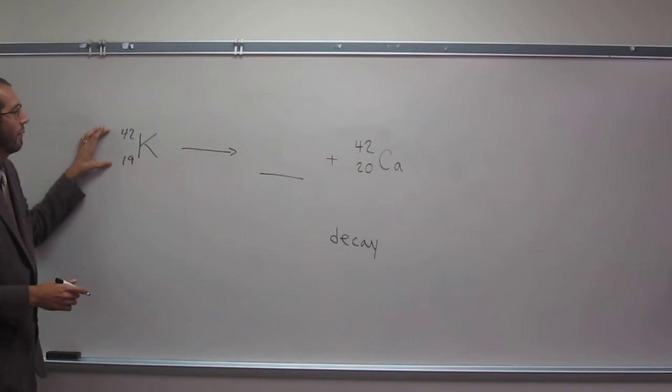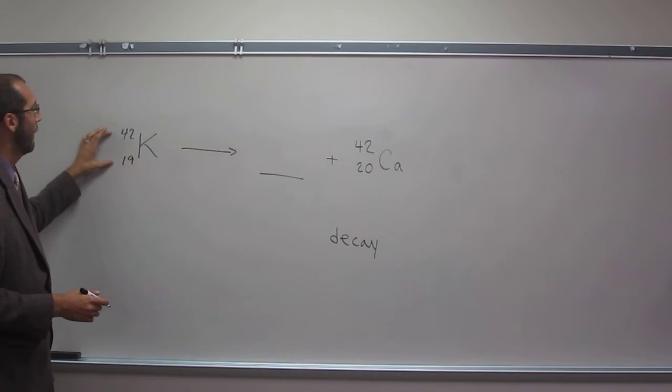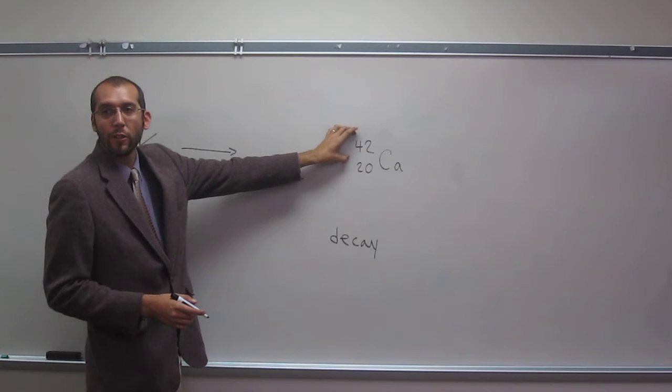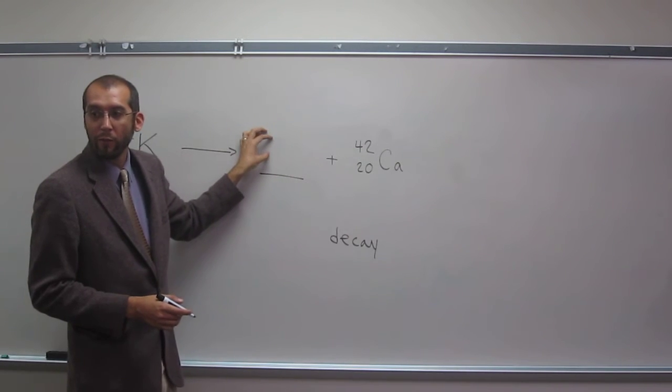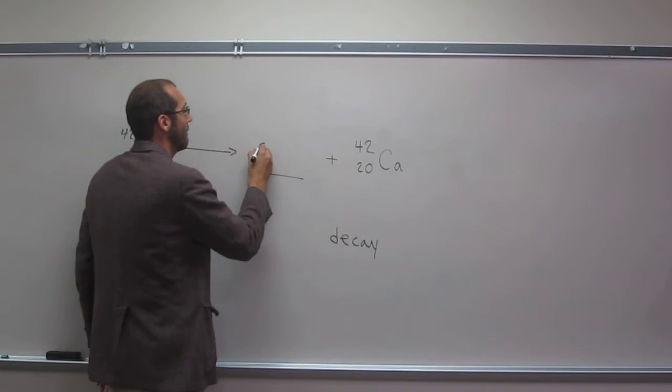So on this side, we got 42 and 19. On this side, we still got 42 as a mass number, so we know whatever particle we have here is going to have a mass of zero.